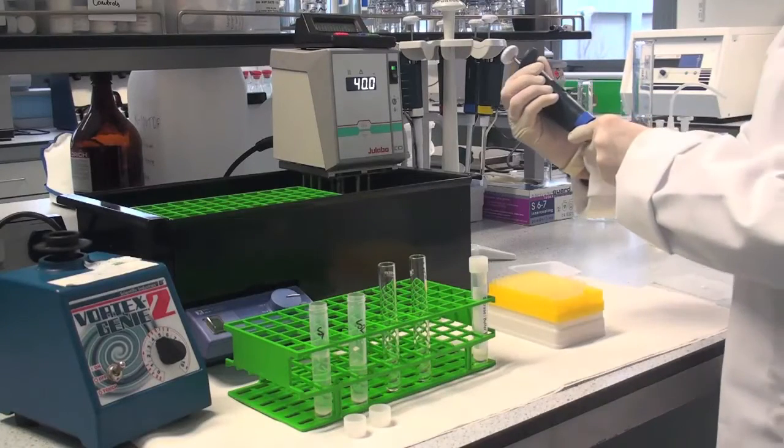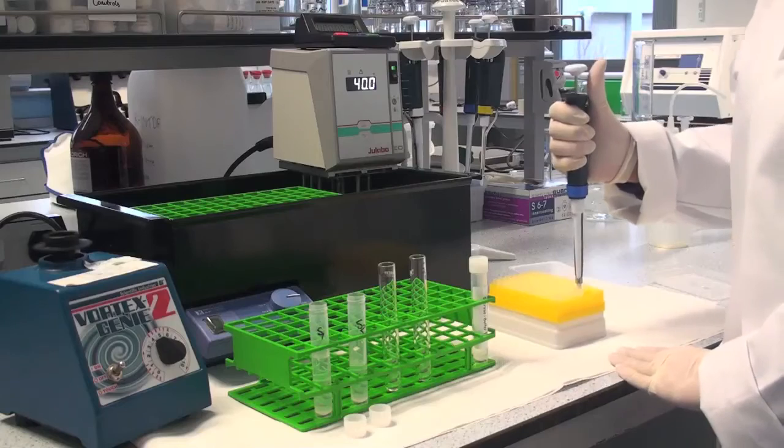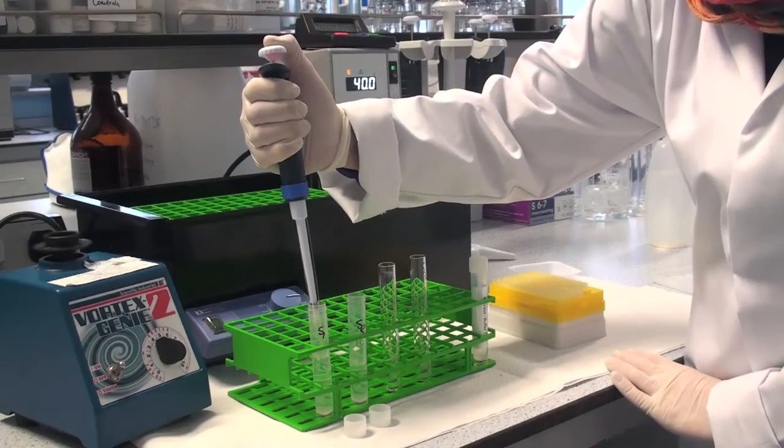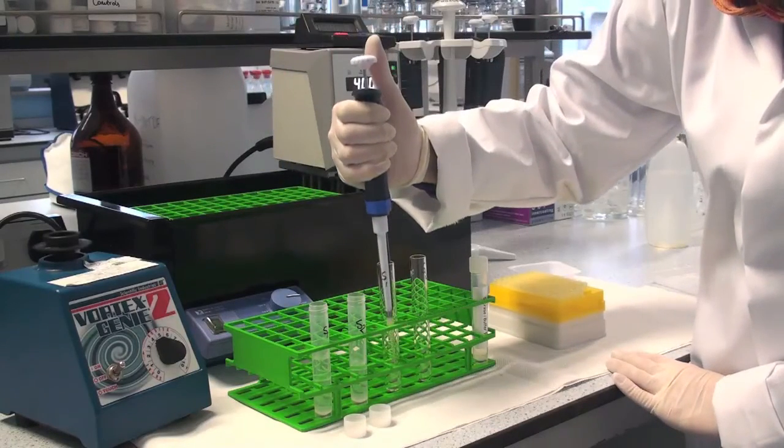Accurately dispense a 0.2 ml aliquot of each of the solutions to be analyzed, which contain between 0.1 and 1 mg per ml of fructan, into the bottom of a glass test tube of 16 by 100 mm dimension.